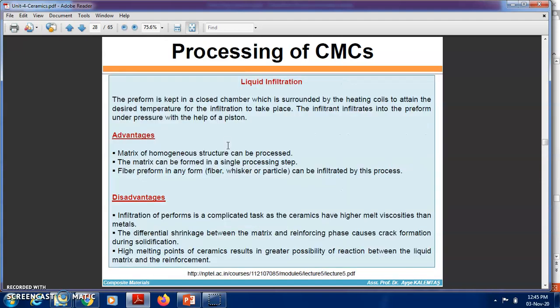The advantages are: homogeneous matrix structure can be processed, and the matrix can be formed in a single processing step. Disadvantages: fiber preform in any form is a complicated task as ceramics have higher melt viscosity than metals; differences in CTE between matrix and fiber reinforcement can cause cracks to develop; and melting points of ceramics result in greater possibilities of reaction between liquid matrix and reinforcement.